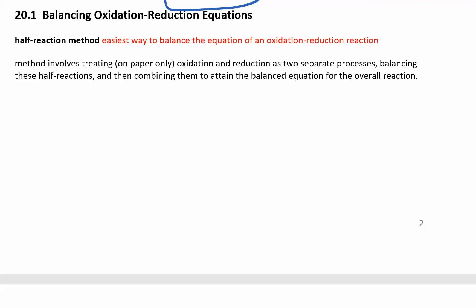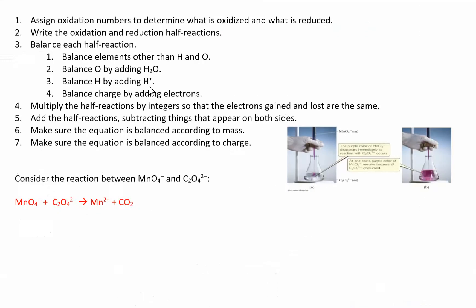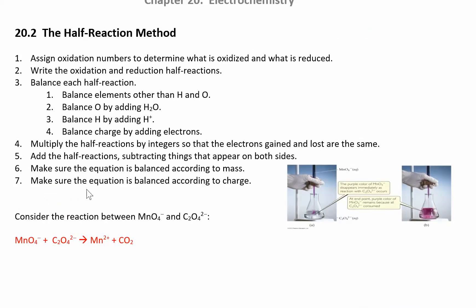We can start balancing half reactions using the half reaction method. This involves several steps which look intimidating at first but it's a very systematic way of doing it. The first one might take a while, but as you practice you'll get a lot faster. The first thing you want to do is check whether an oxidation reaction is actually happening.